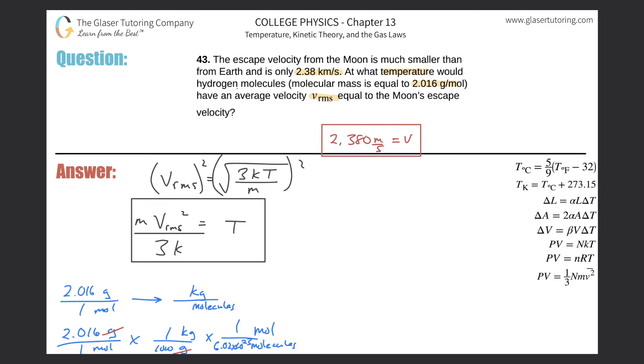Now the moles will cancel. Now all we're going to do is just plug this into the calculator. So here we have 2.016 divided by a parenthesis, 1000 multiplied by 6.02 times 10 to the 23rd, and we get a kilogram value of 3.35 times 10 to the minus 27 kilograms per molecule.